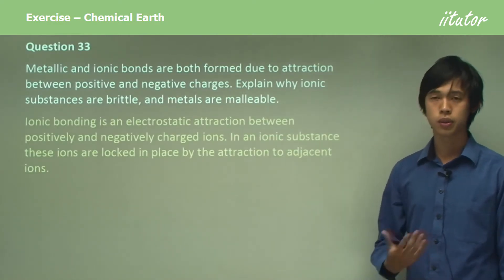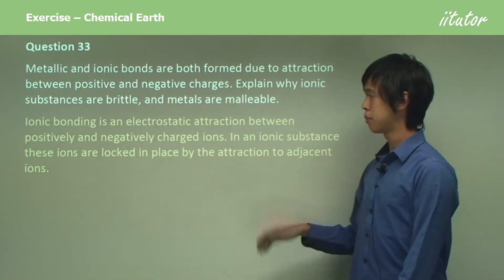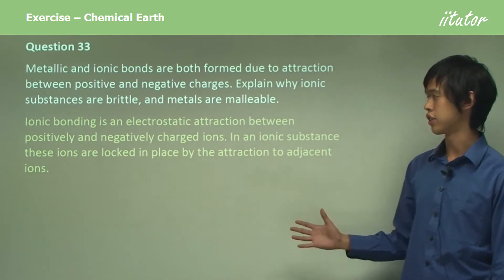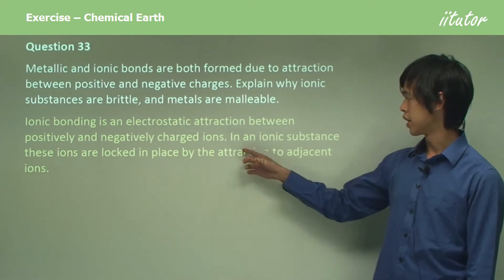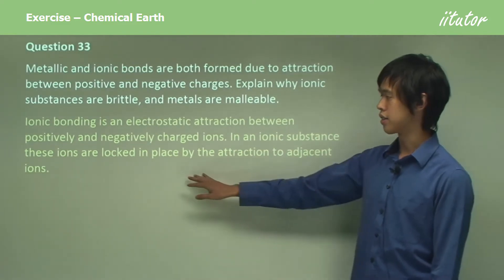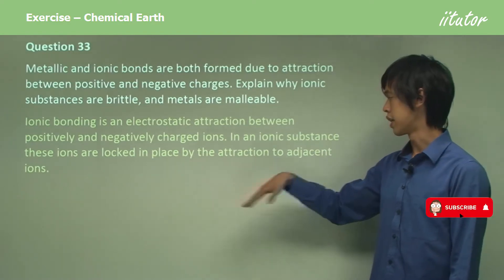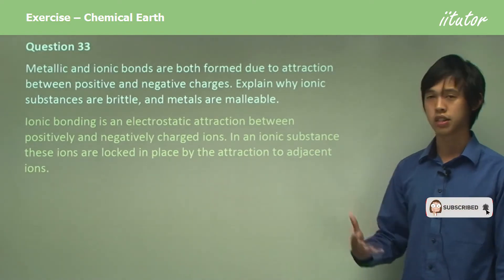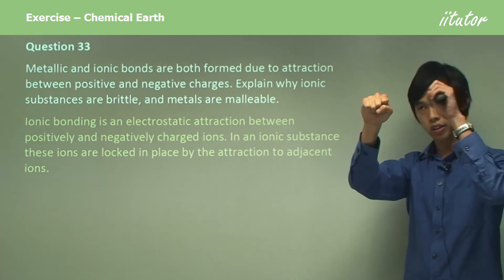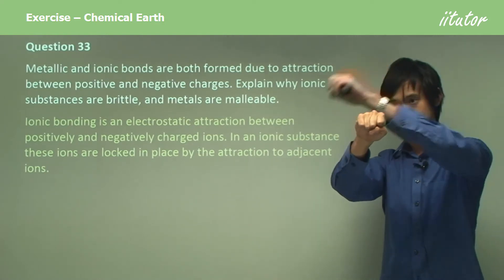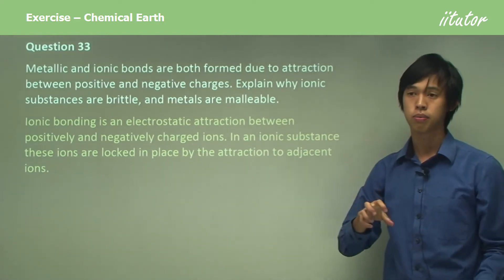So ionic bonding, as we know, is an electrostatic attraction between positively and negatively charged ions. So in an ionic substance, these ions are locked in place by the attraction to adjacent ions. So each ion is held tightly in place because other ions around it are holding it there.